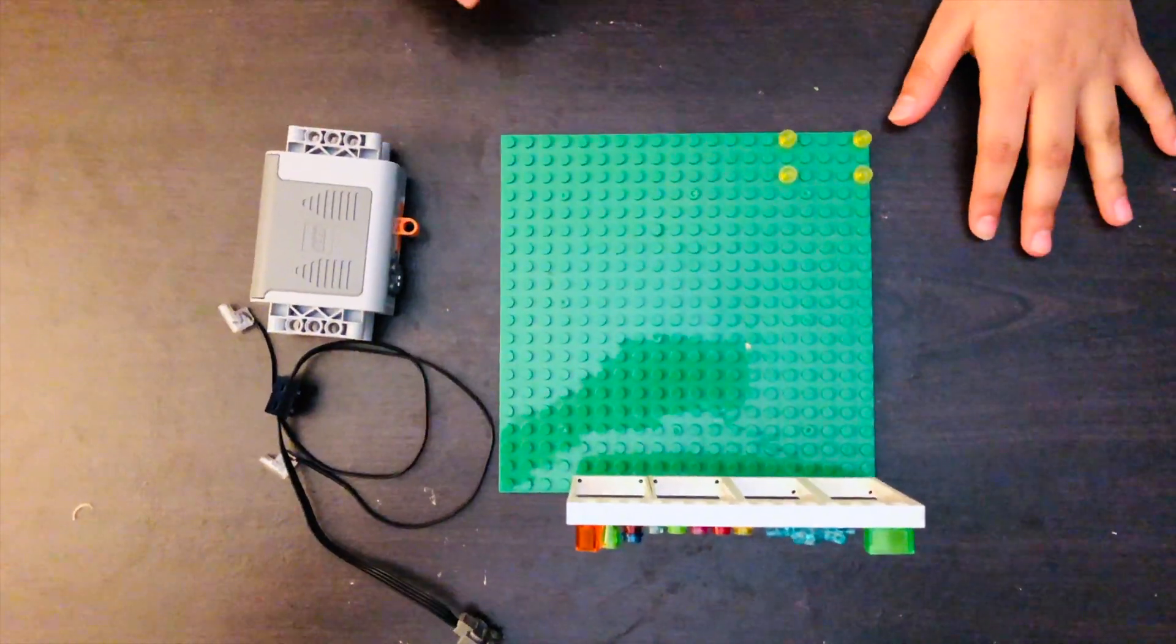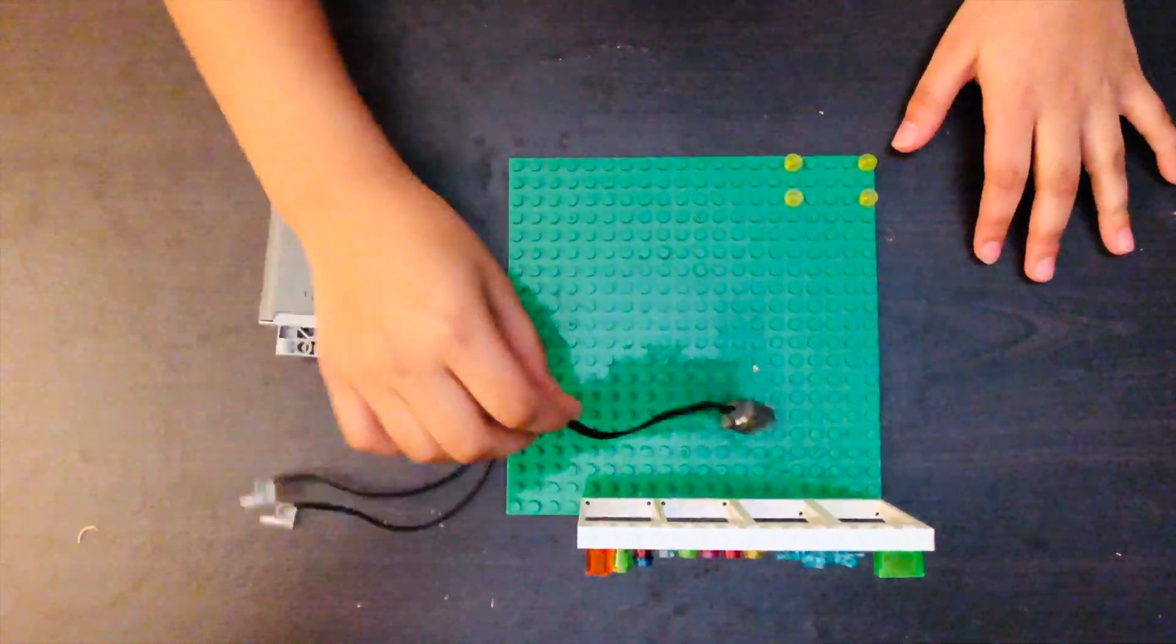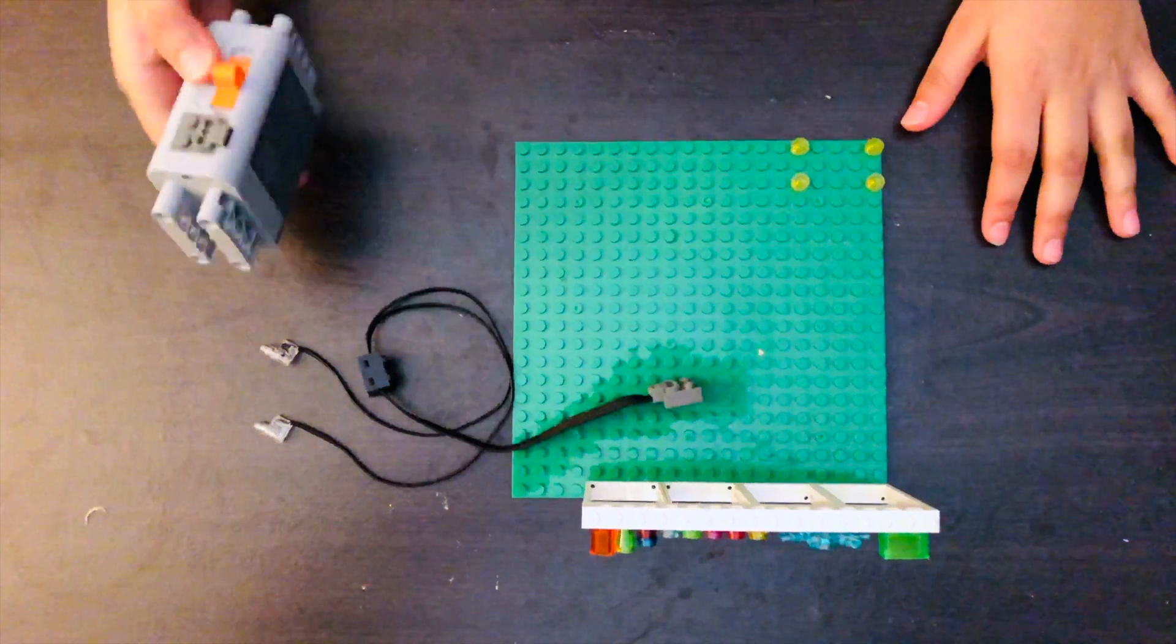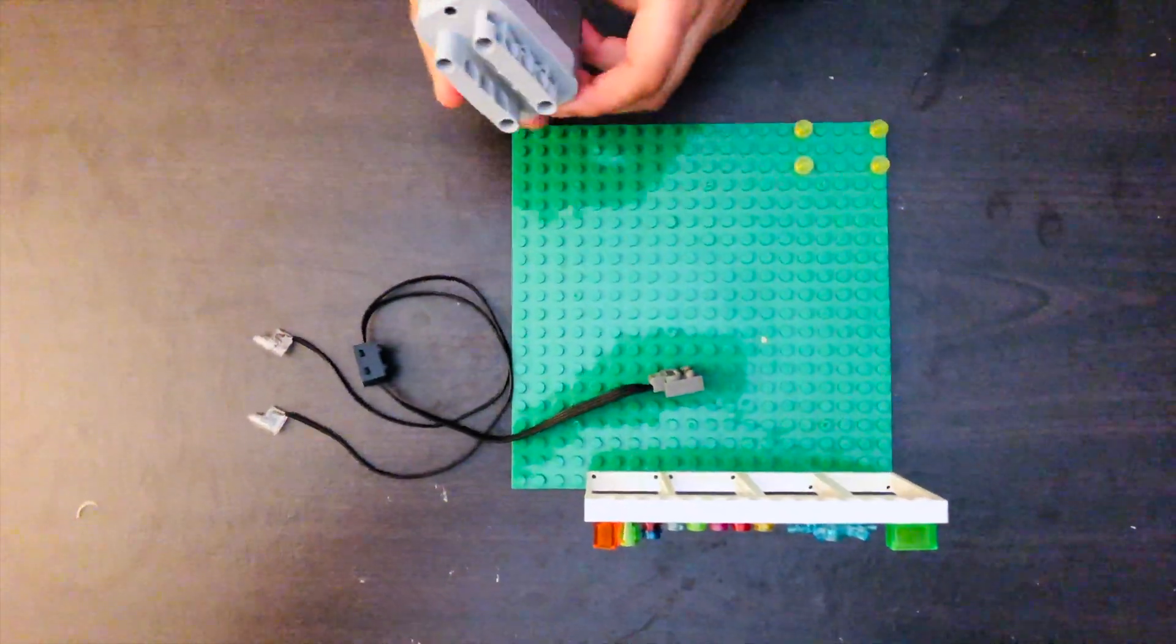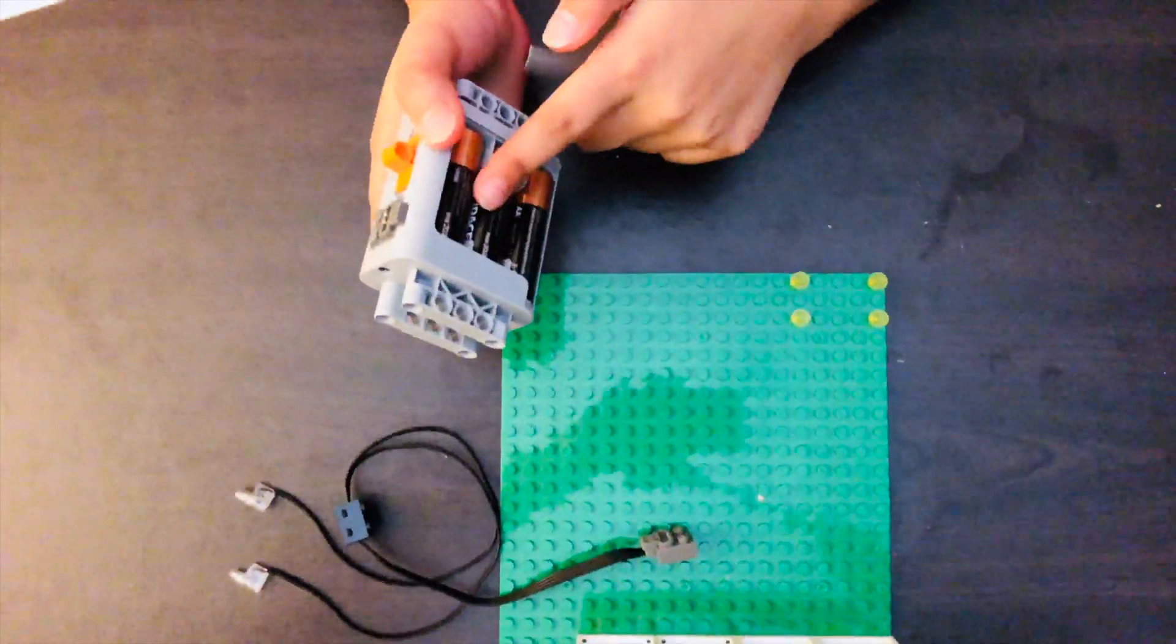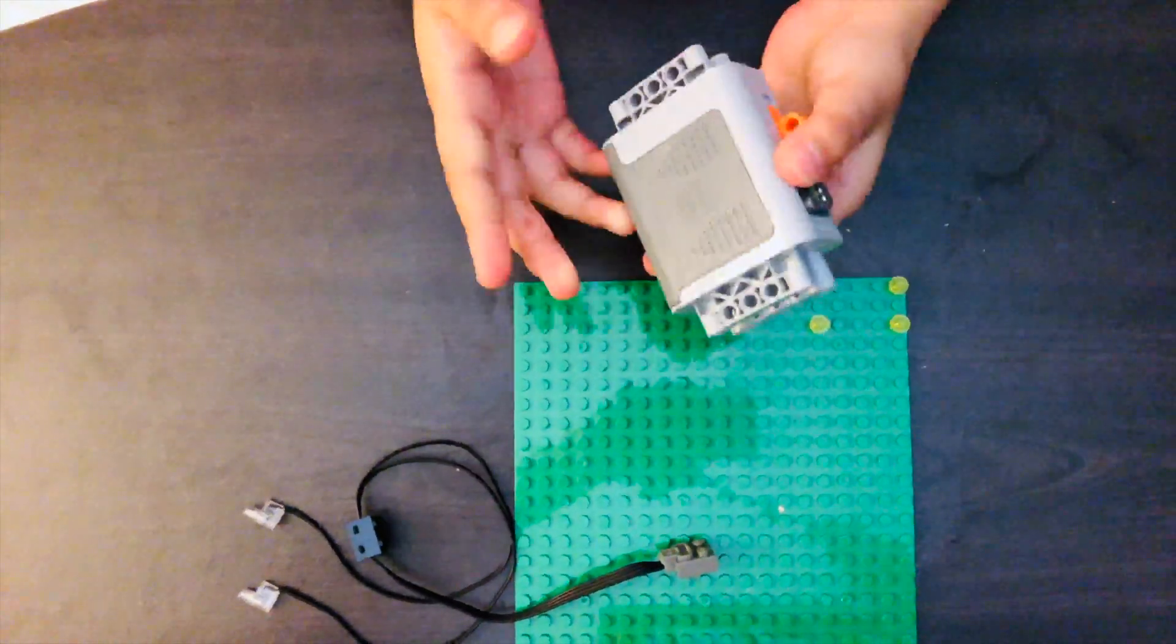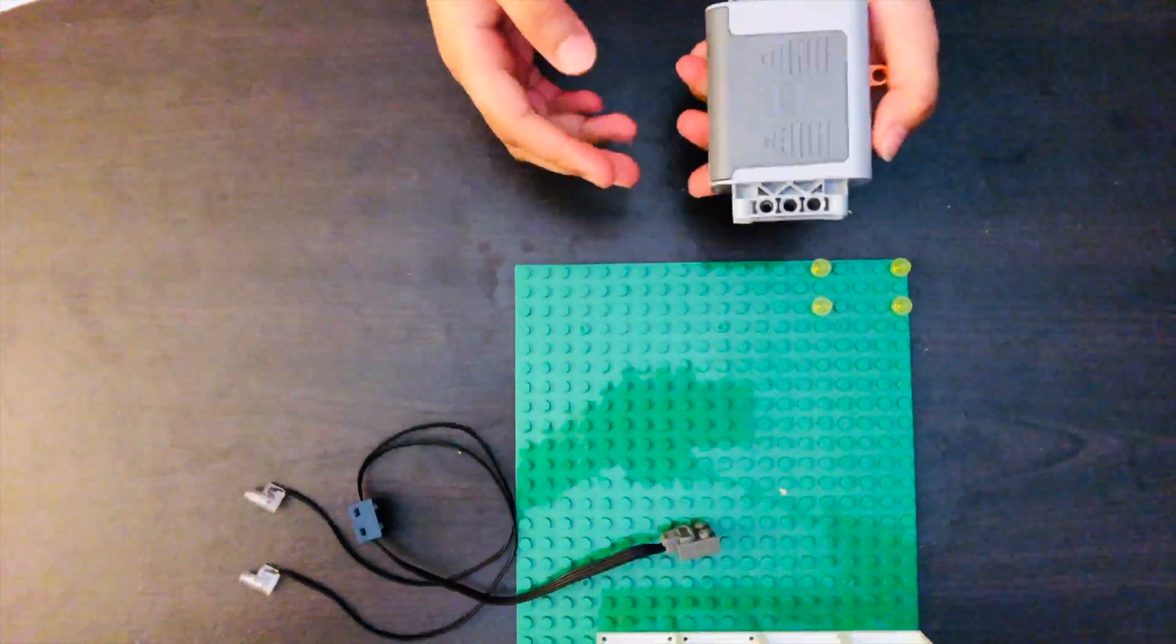Before I show you the demonstration of the lights, I will explain how the battery box works. For each side, you have to put in 3 batteries, which makes it 6 batteries in complete total.